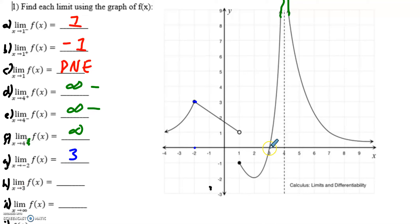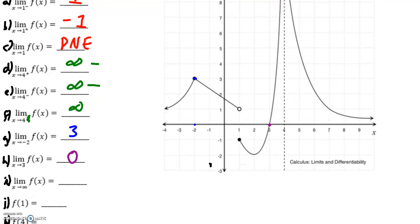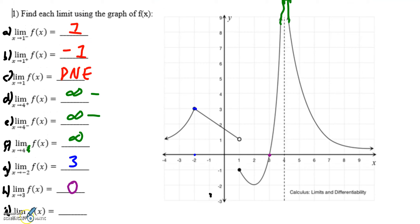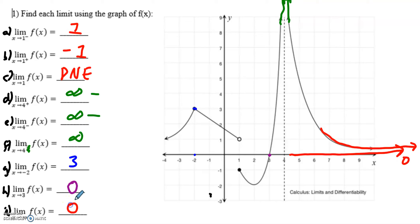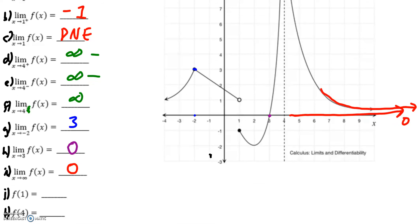As x approaches positive three, my graph as it approaches three from either side — from the left it's at zero, and from the right it's also zero — so my limit is zero from both sides. For the limit as x goes towards infinity, as the graph goes towards positive infinity with the x value, the y value is getting closer and closer to the x-axis, meaning the y value is approaching zero. So my limit for part i would also be zero.